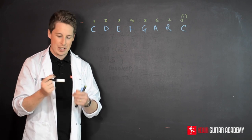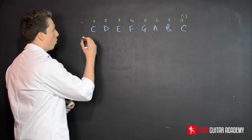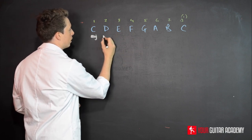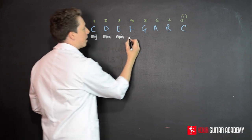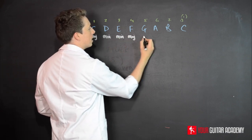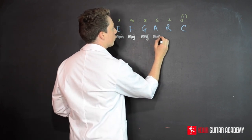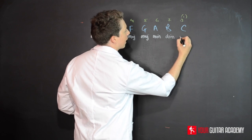We ended up with the fact that the one chord is always major, the second chord is always minor, the third chord is always minor, then we had major on the four, major on the five, then minor on the six, diminished on the seven, and then back to major again.